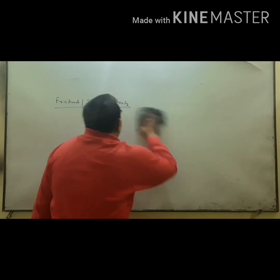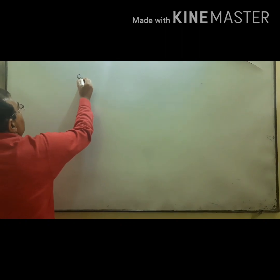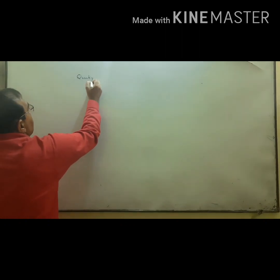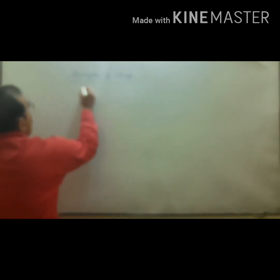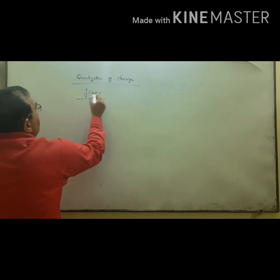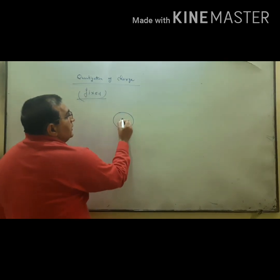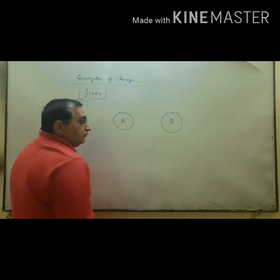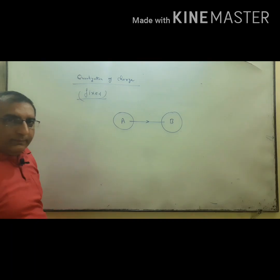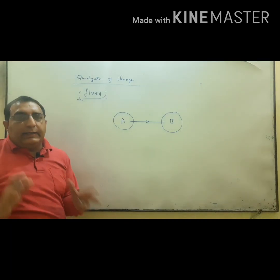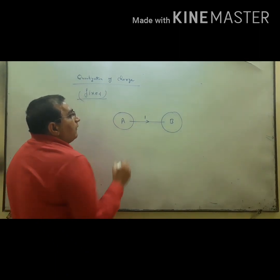The next point is quantization of charge. Quantize means fixed — charge is fixed. Suppose this is body A and body B. On rubbing, electrons are moving from A to B. The minimum number of electrons that can transfer from A to B is 1.